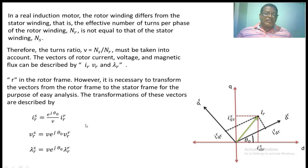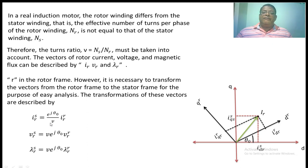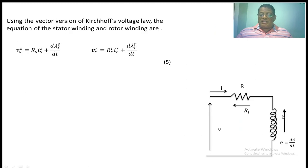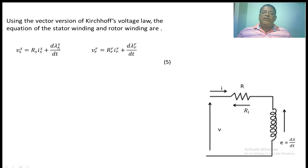From the equivalent circuit, the stator has stator resistance and stator inductance, represented as E = dΛ/dt. The stator voltage equation is: V_S^S = RS·I_S^S + d/dt(Λ_S^S). For the rotor: V_r^r = Rr·I_r^r + d/dt(Λ_r^r). This is the resistance drop and the voltage induced in the rotor inductance on the rotor frame.